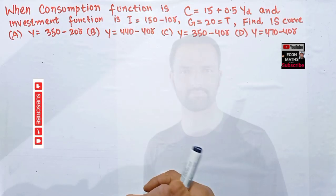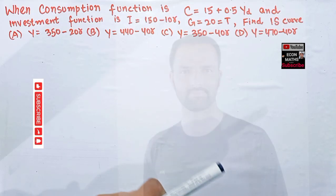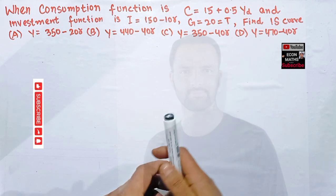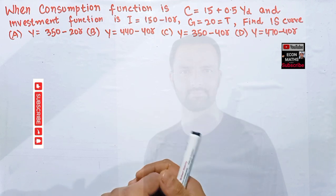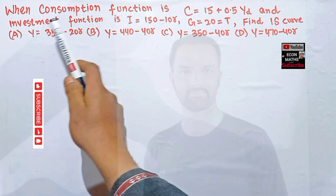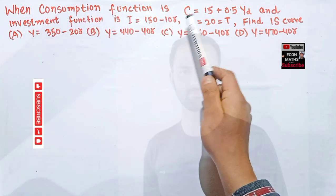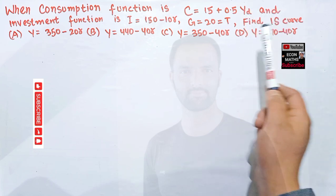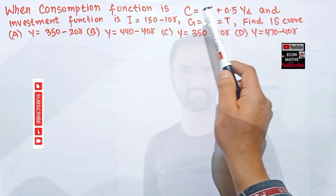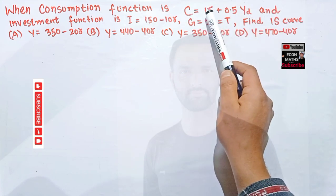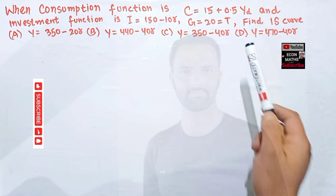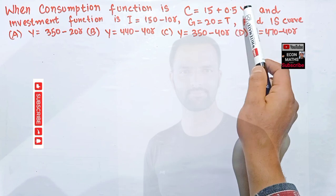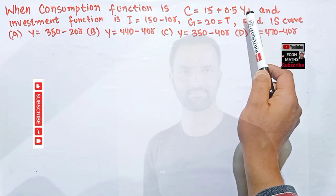In this video on mathematical economics, we will solve a problem on finding the IS curve from the given consumption and investment function. The consumption function is given as C = 15 + 0.5 Y_d, where C is consumption, 15 denotes autonomous consumption that does not depend upon disposable income, 0.5 is the marginal propensity to consume, and Y_d denotes disposable income.